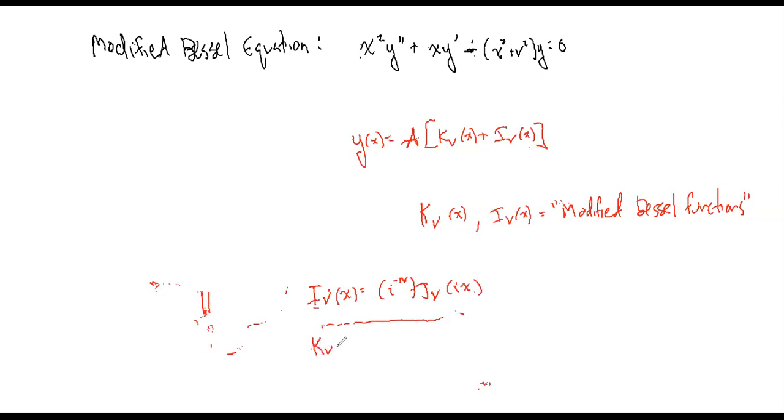I_nu of x equals i to the minus nu J_nu of ix, and K_nu of x is pi over two i to the n plus one, J_nu of x plus i N_nu of x. So if that is completely illegible look them up in math world or something like that.